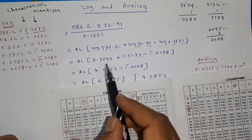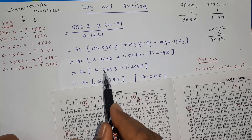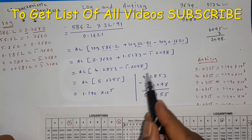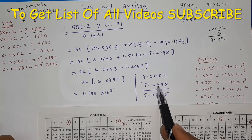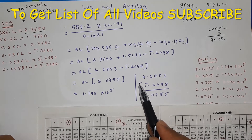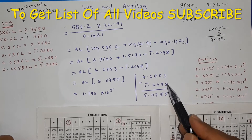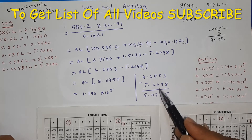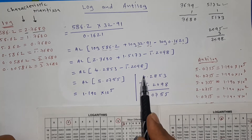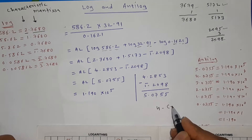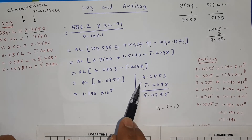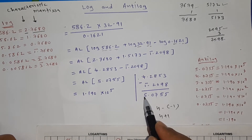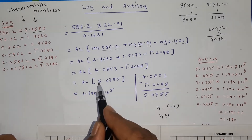Now for the arithmetic: add log 586.2 and log 32.91 to get 2.7680 + 1.5173 = 4.2853. Then subtract log 0.1621 (which is bar 1.2098): 4.2853 − (bar 1.2098). Bar 1 means −1, so subtracting bar 1.2098 means subtracting −1.2098. Working through: 3−8 borrows to give 5, 14−9=5 carry 1, 7−0=7, 2−2=0, and 4−(−1)=5. The result is 5.0755.